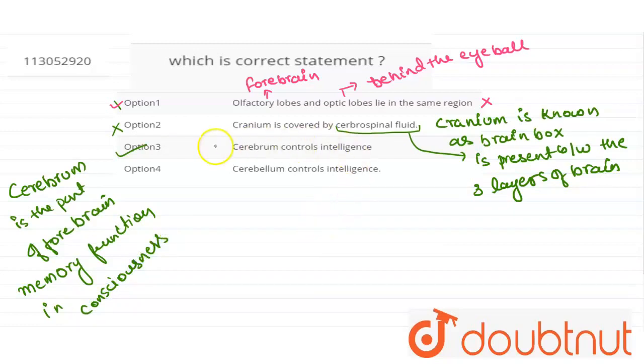So the correct answer is option number 3, but we will also look at option number 4. The cerebellum portion is responsible for the function of balancing. Cerebellum performs function of balancing in human body. So our correct statement for this question is option number 3.